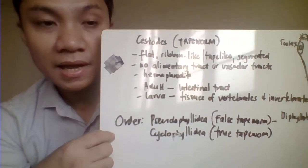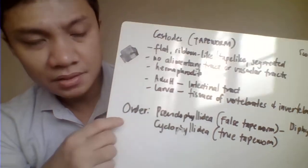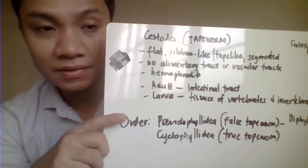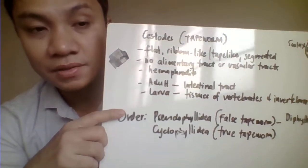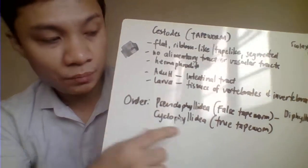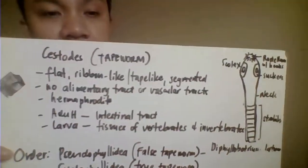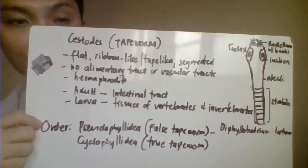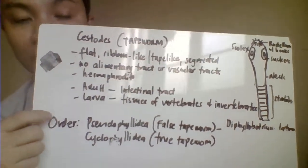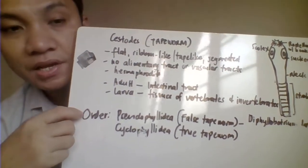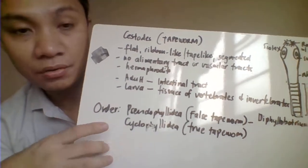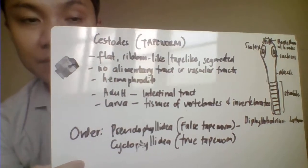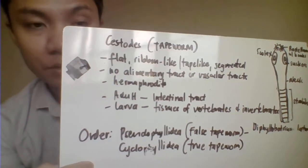Cestodes are divided into two orders: Pseudophyllidea and Cyclophyllidea. Pseudophyllidea — 'pseudo' meaning false — is the false tapeworm, with only one species: Diphyllobothrium latum. The rest of the cestode species belong to Cyclophyllidea, meaning they are the true tapeworms.